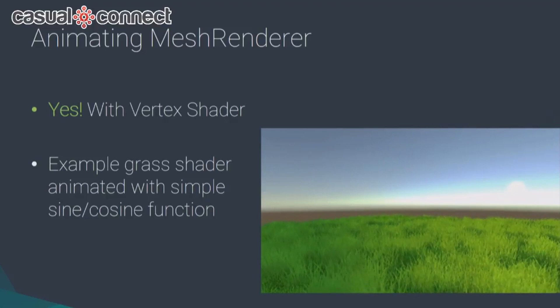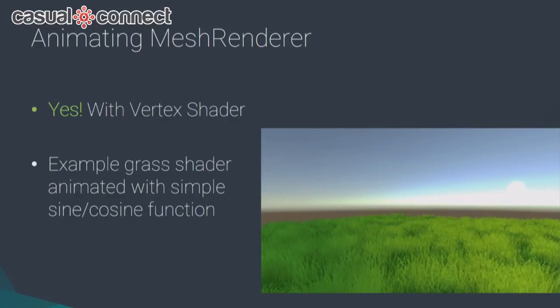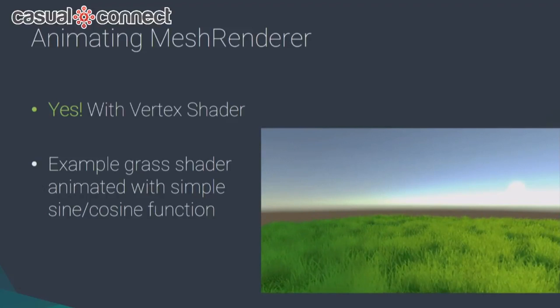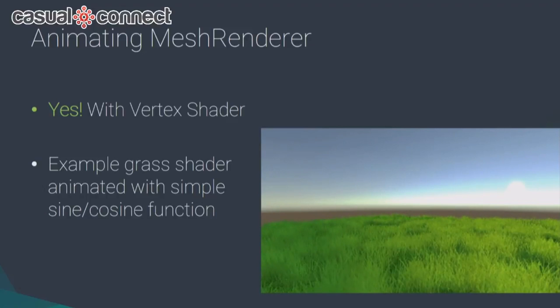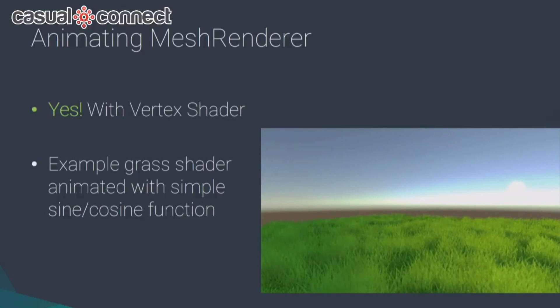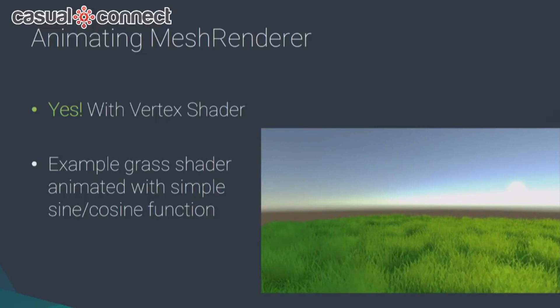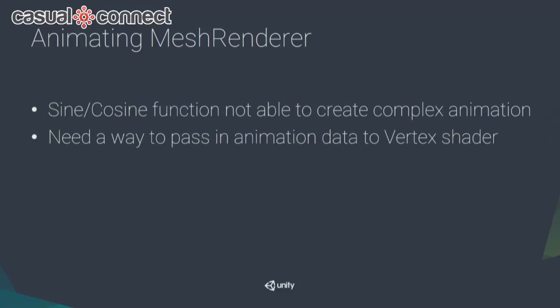Yes — we can animate mesh renderers with vertex shaders. We've seen this many times: grass animated with vertex shaders, or trees with leaves blowing in the wind. But for our case, animating characters with just sine and cosine functions is not enough. We need a more elaborate way to pass animation data into the vertex shader.